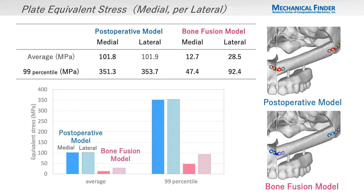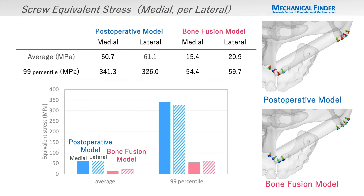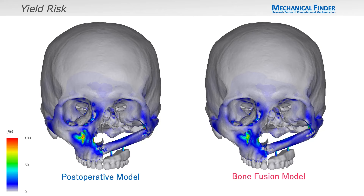A numerical comparison showed that the plates in the postoperative model are clearly more stressed, and the screws have the same findings as the plate. The distribution of yield risk showed that the risk was higher at the maxillary bone junction, infraorbital foramen, and piriform foramen, rather than at the fibula or plate.